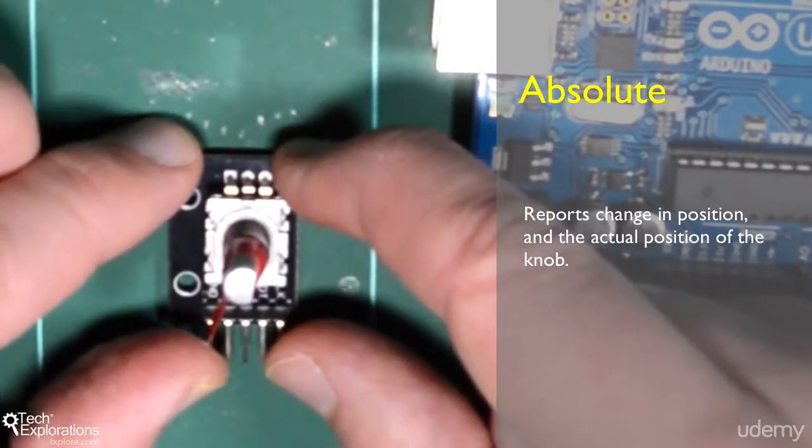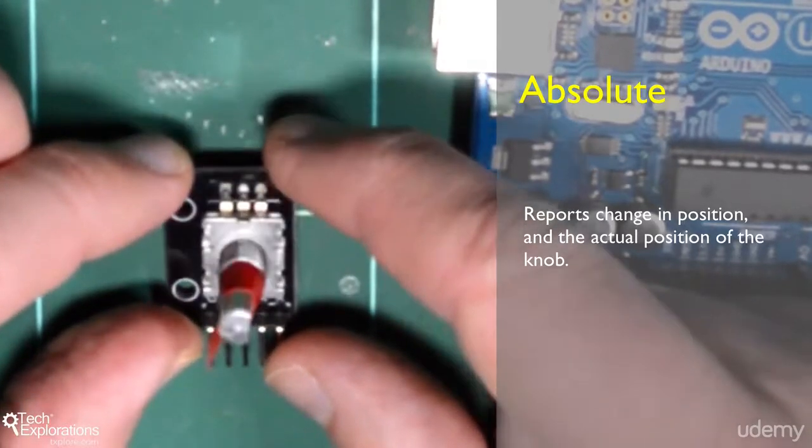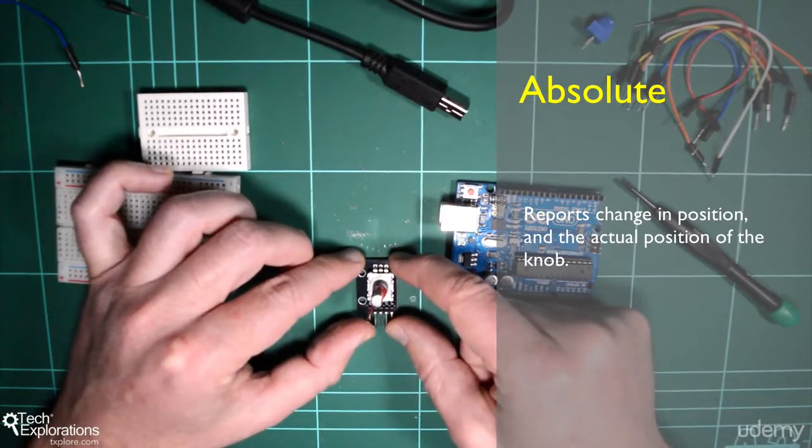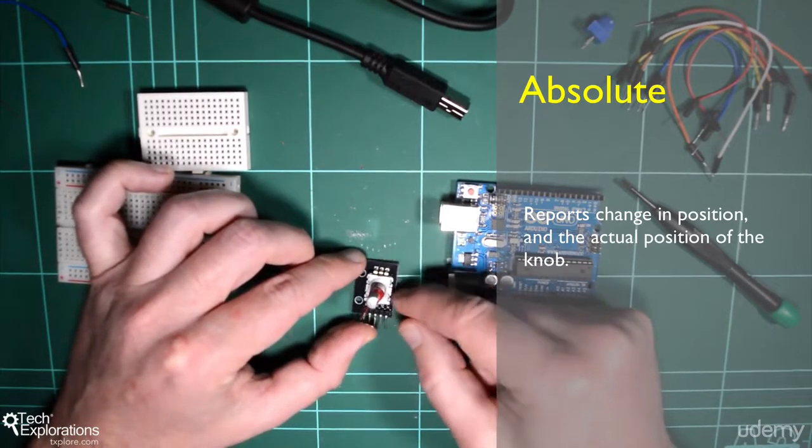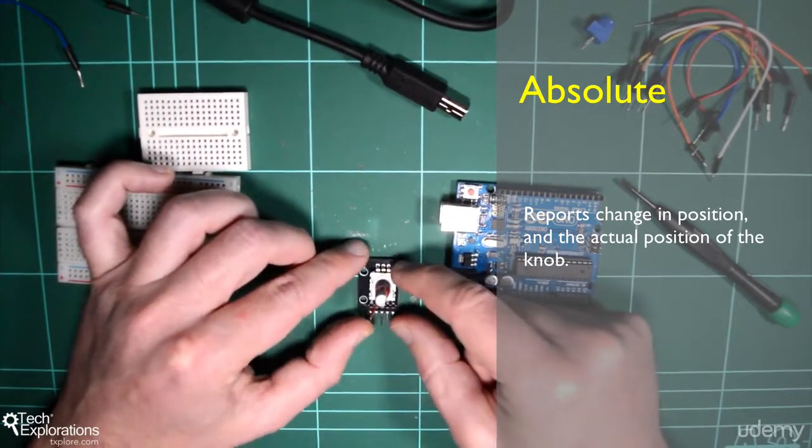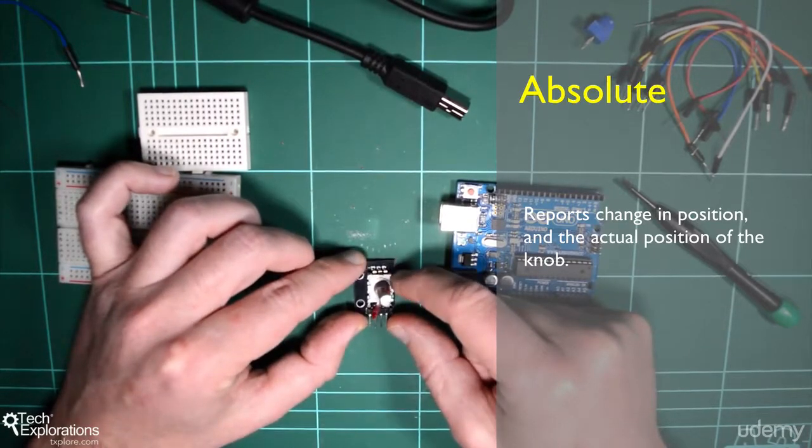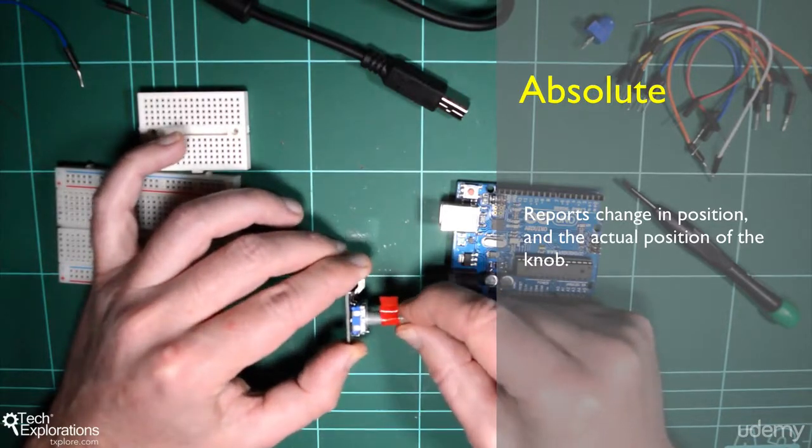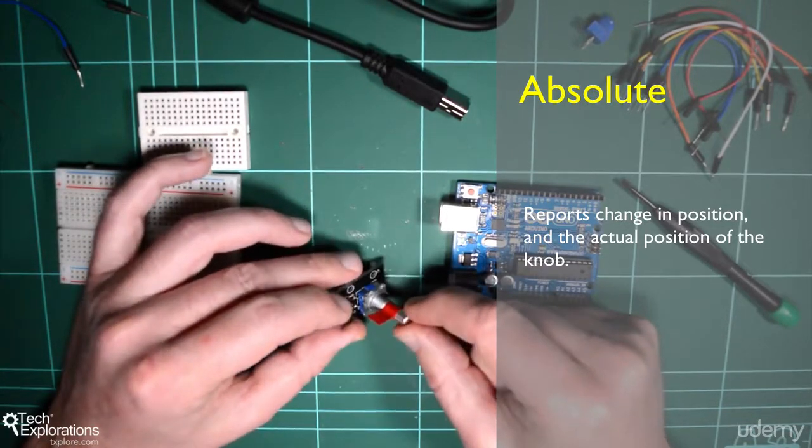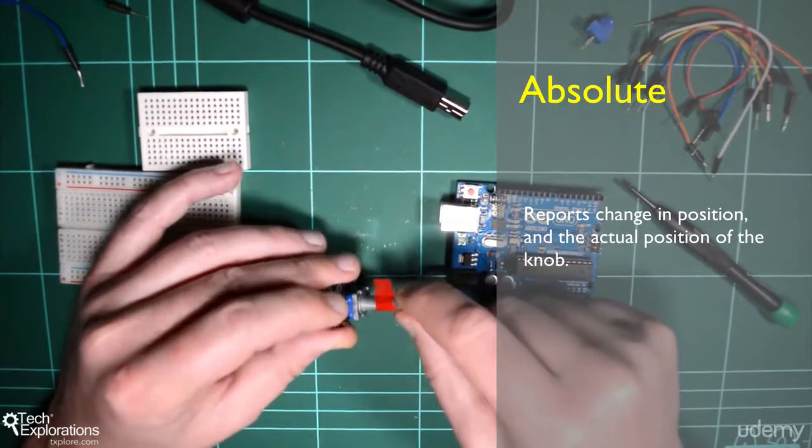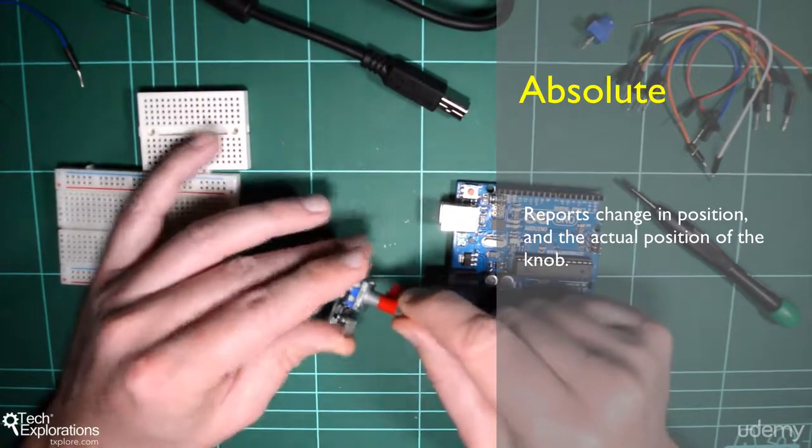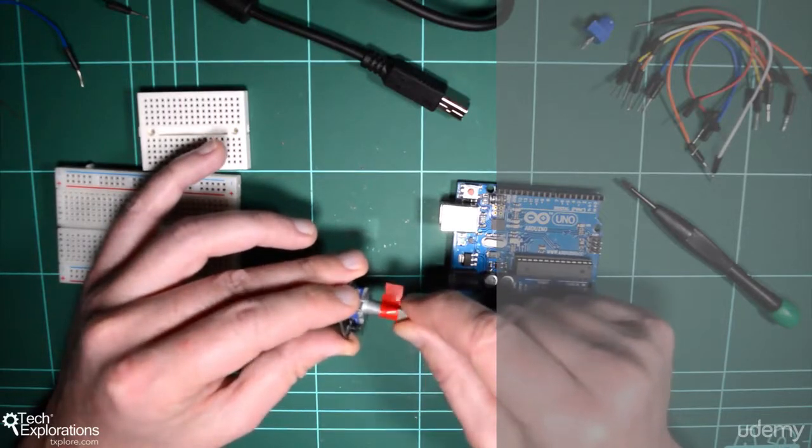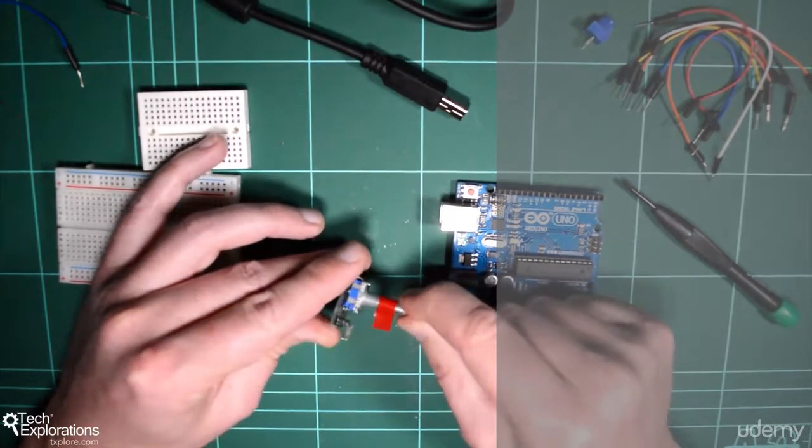The other nice thing about absolute encoders is that the device knows its position even after power has just been restored. So there is a mechanism inside that reports the accurate position of the encoder. In most cases, we don't really need that kind of capability. We just need to know that the user has turned the knob and by how many positions. And for those cases, an incremental encoder is perfect.